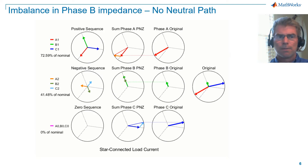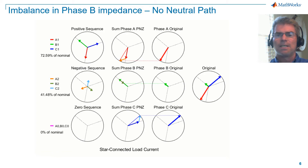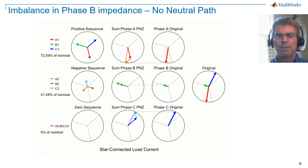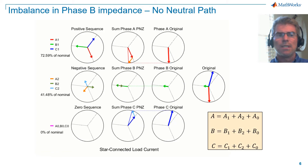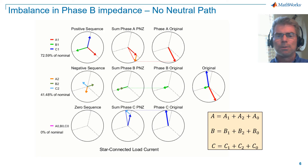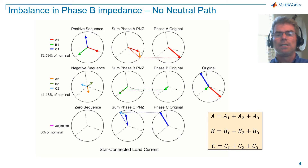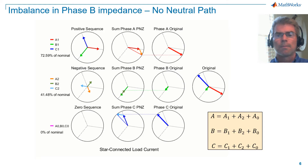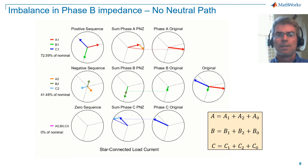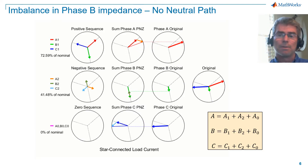In the middle column, we add the sequence vectors to reconstruct the original vectors. For phase A reconstruction, we add A1, A2, and A0. For phase B reconstruction, we add B1, B2, and B0. For phase C reconstruction, we add C1, C2, and C0. Note that we have a measure of how unbalanced the system is, with the negative sequence being approximately 41.5 percent of nominal for this example.